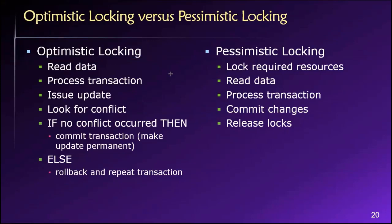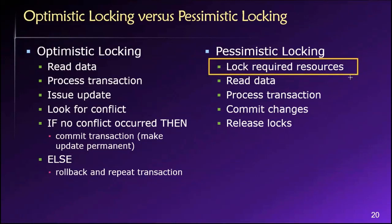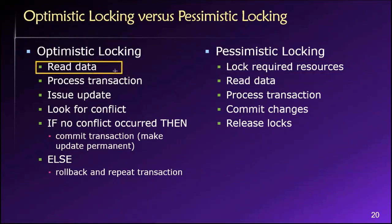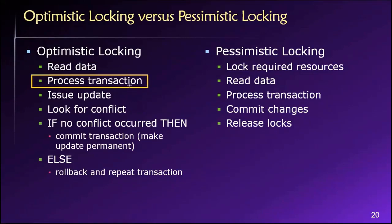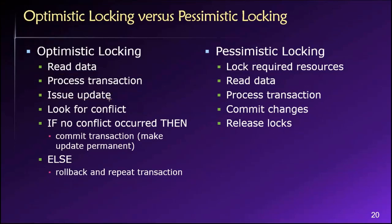Let's see what happens with optimistic locking. It's a different philosophy — we're positive. Instead of locking resources first, we just start doing our work: we read the data, make whatever changes we need in our transaction — inserts, deletes, maybe some updates. Then we look to see if things are as we would expect them to be, checking if our proposed changes match what we'd expect.